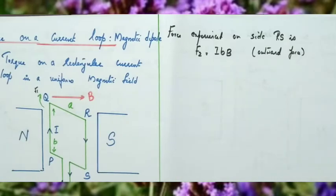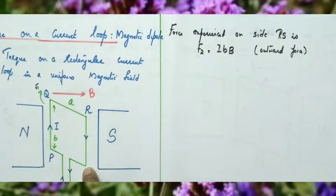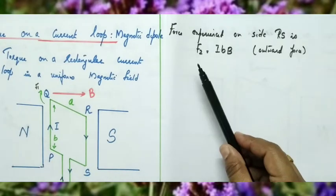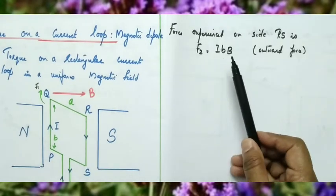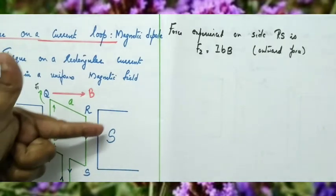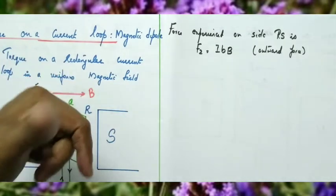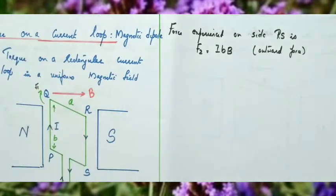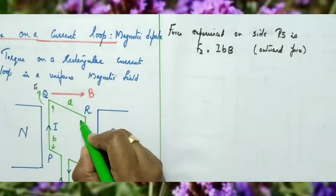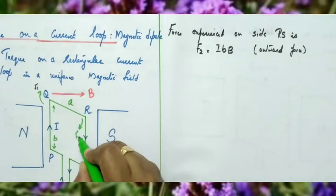Similarly, side RS also experiences a force since it is also a current carrying conductor. The force F2 is also equal to IBB. Here the current is in the downward direction, so RS experiences a normal outward force, represented as F2 directed outward in the figure.